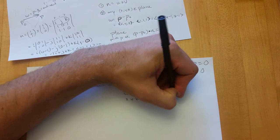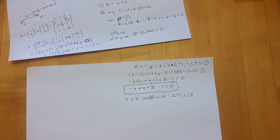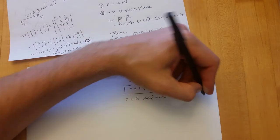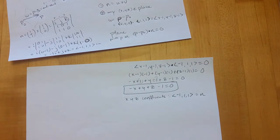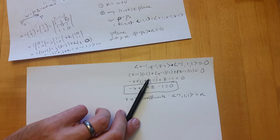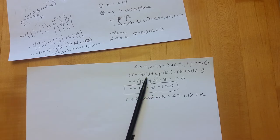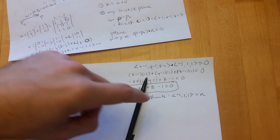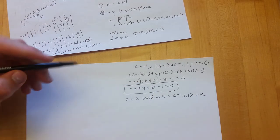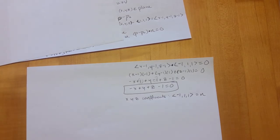Notice how the normal relates directly to this equation: look at the coefficients of x, y, and z — that's ⟨−1, 1, 1⟩, which is exactly our normal vector. This is not a coincidence; it will always be the case. And if a variable like y were missing, that would just mean the y-component of your normal is zero — y still exists, you just have zero of it.